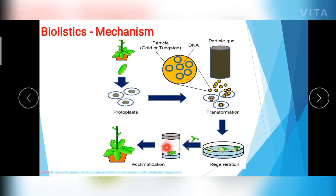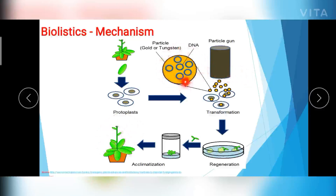These plantlets are cultured in tissue culture media, and after a particular period of time, they are habituated to the outside environment and complete plantlets are developed. These plantlets will have the ability to express the gene which has been inserted. The DNA present on the particles gets inserted into the target plant cells when projected at high speed, and the genes get inserted into the plant chromosome, transforming the plant cells.